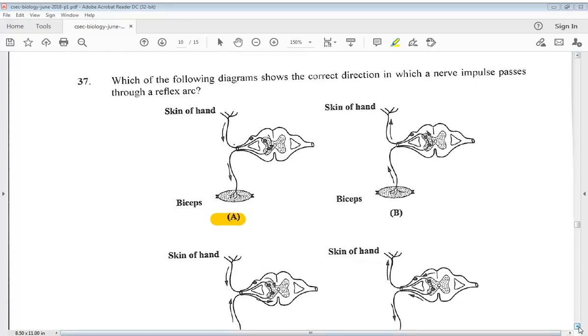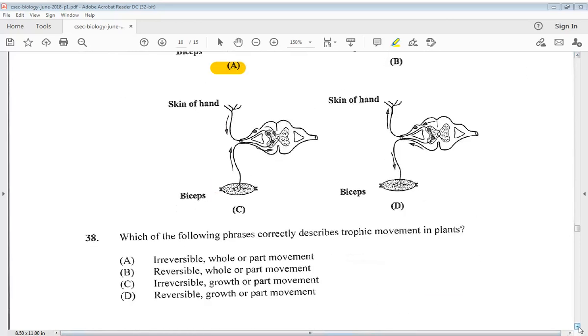Let's go to number 38. Which of the following phrases correctly describes tropic movement in plants? A. Irreversible, all or part movement. B. Reversible, all or part movement. C. Irreversible, growth or part movement. D. Reversible growth or part movement. So 38 would be C, irreversible growth or part movement.